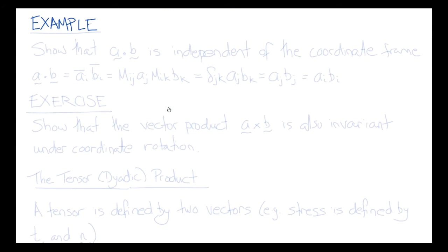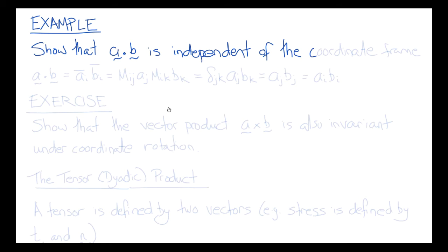As an example, let's show using this orthogonal transformation that the dot product A·B is independent of the coordinate frame. In other words, we're going to show that regardless of which coordinate frame we use to take the dot product between two vectors, we get the same result. This is important because it suggests that the dot product between two vectors is also a physical quantity. So A·B in the new frame of reference would be AI_bar times BI_bar.